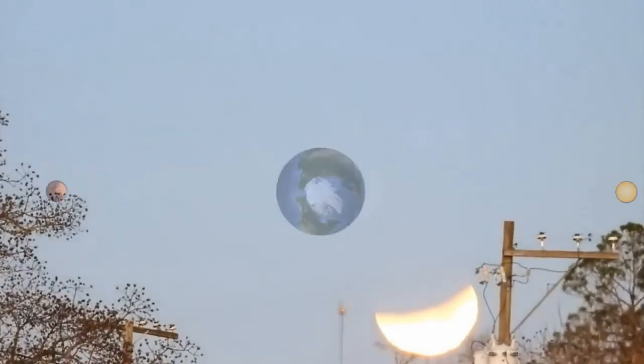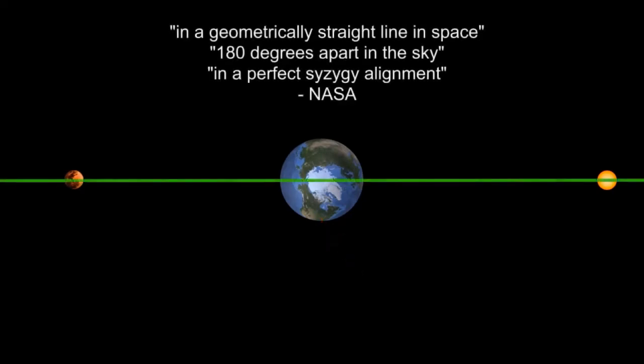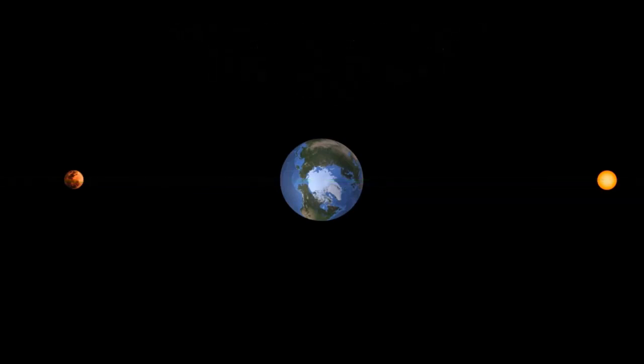So here's Ron on the terminator line in Chipley, Florida, and here's his sun, earth, and eclipsed moon in a geometrically straight line in space, 180 degrees apart in the sky, in a perfect syzygy alignment. And Ron is able to experience both sun and eclipsed moon on his horizon because he's actually seeing them in their refracted positions, right?